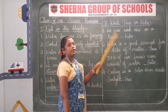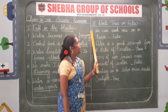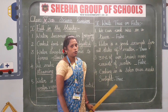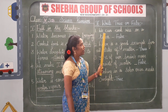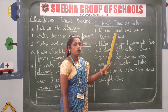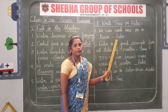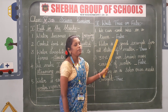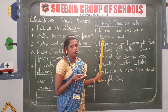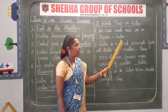Then move to the second Roman numeral letter: True or False. Now number one: we can cook rice on a tava. That is a wrong statement, so write false. On a tava you make dosa, not rice, so it is false.